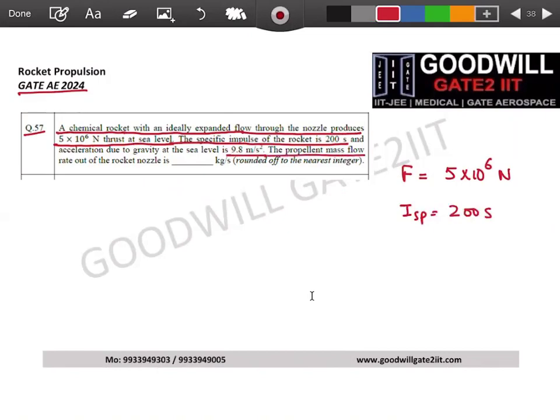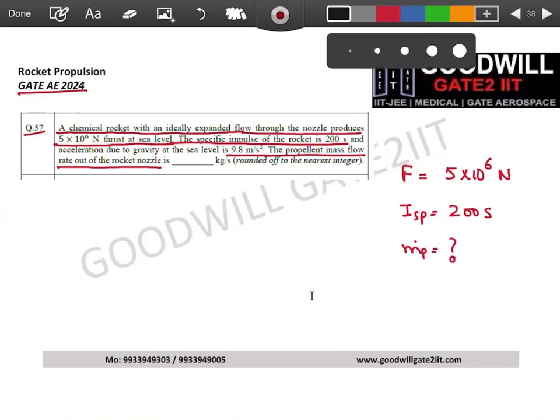The propellant mass flow rate throughout the rocket nozzle is kg per second, fill in the blank. So you need to calculate m dot p, that's it. I think everyone is very much clear here. It was a gift in 2024 for two marks in your gate exam guys.